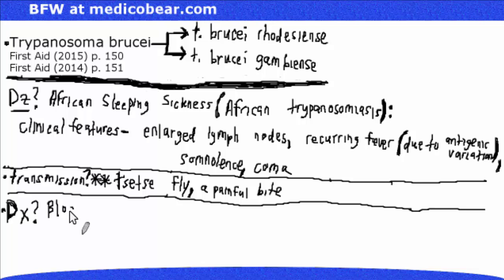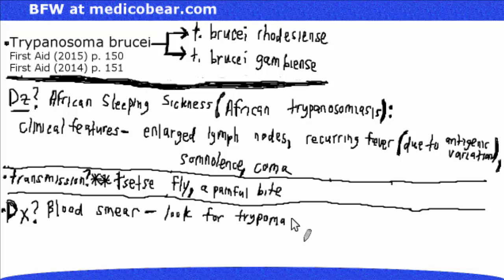It's going to be diagnosed by doing a blood smear, and we are looking for trypomastigotes in the blood smear. Some sources have also noted that you can look for trypomastigotes in the cerebrospinal fluid, also known as the CSF.